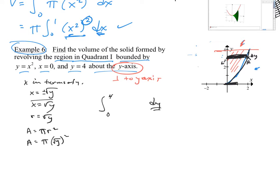0 to 4. They're the y's. So I start down here and I finish up here. And so then I have my pi. It can go out in front. And then I have square root of y, quantity squared.